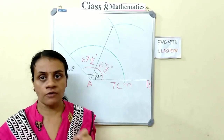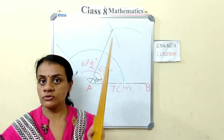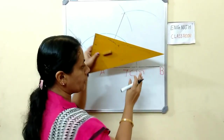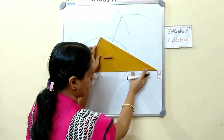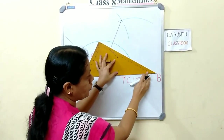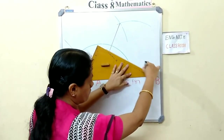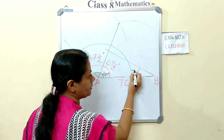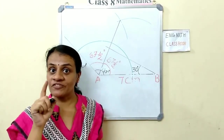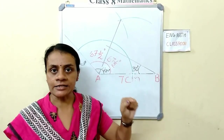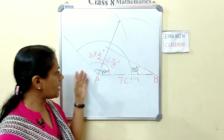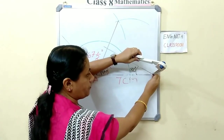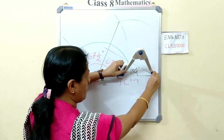Next, draw angle B of 15 degrees without using a protractor. For that, use the set square — the smallest angle is 30 degrees. Keep the 30-degree angle at B and draw a line.